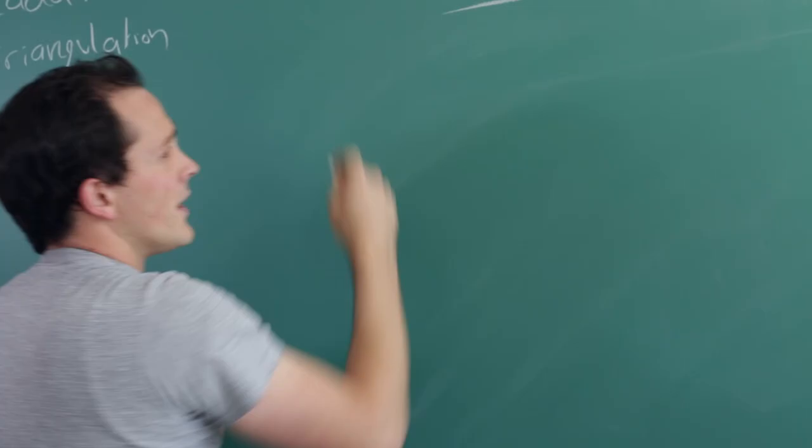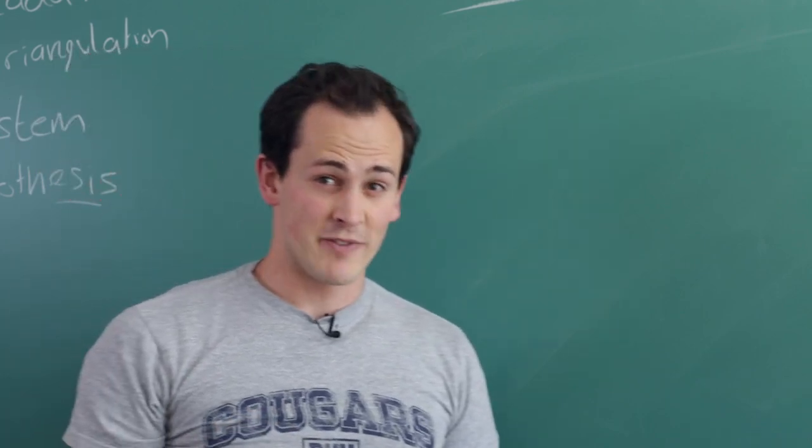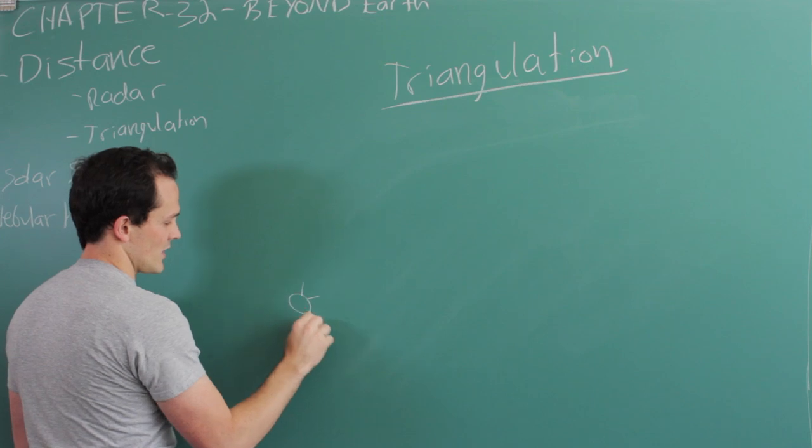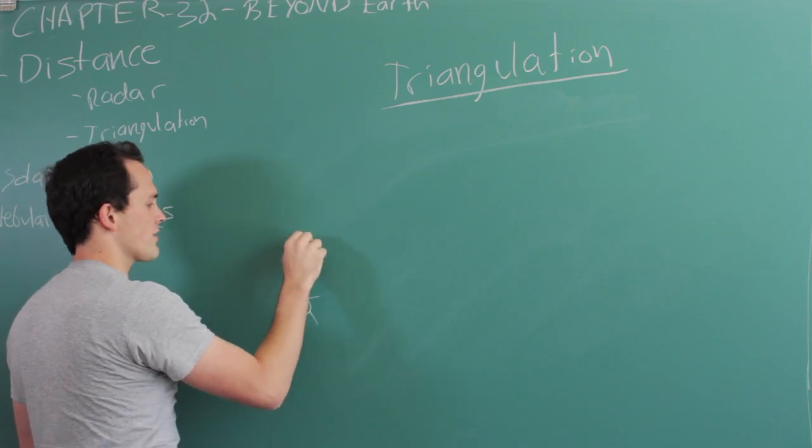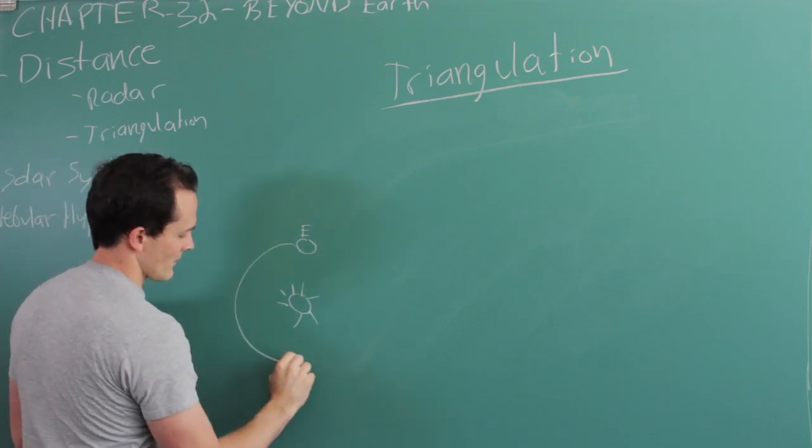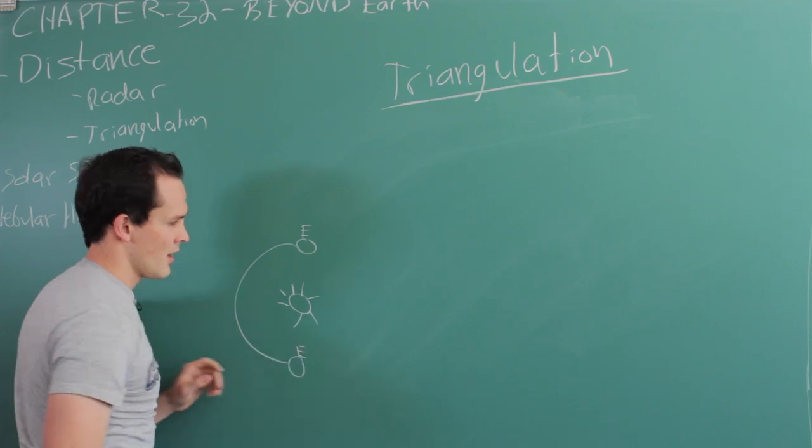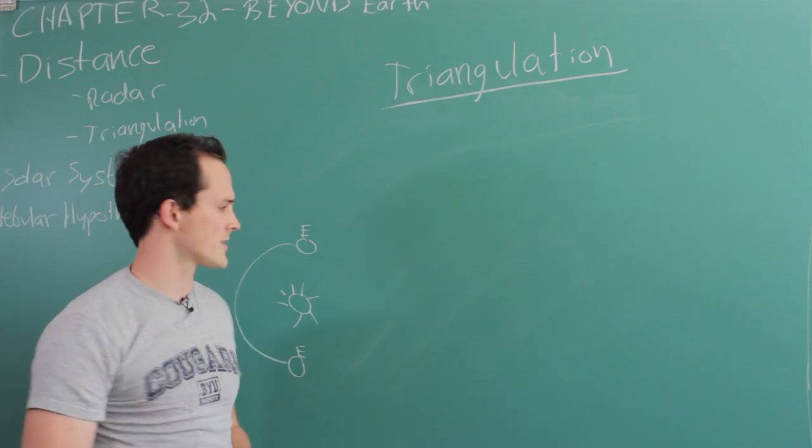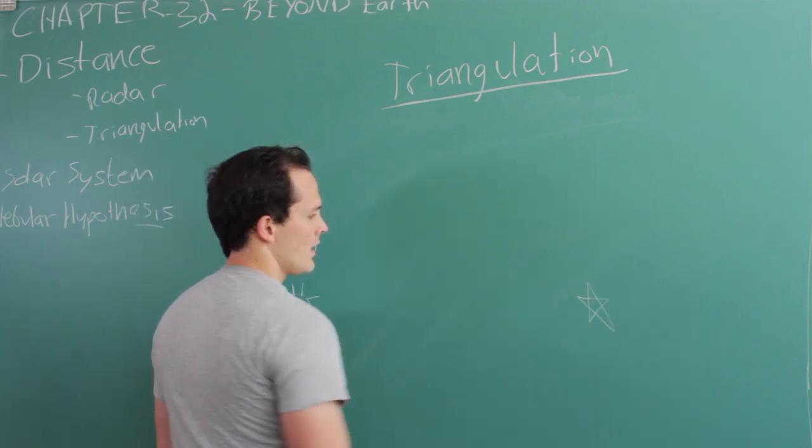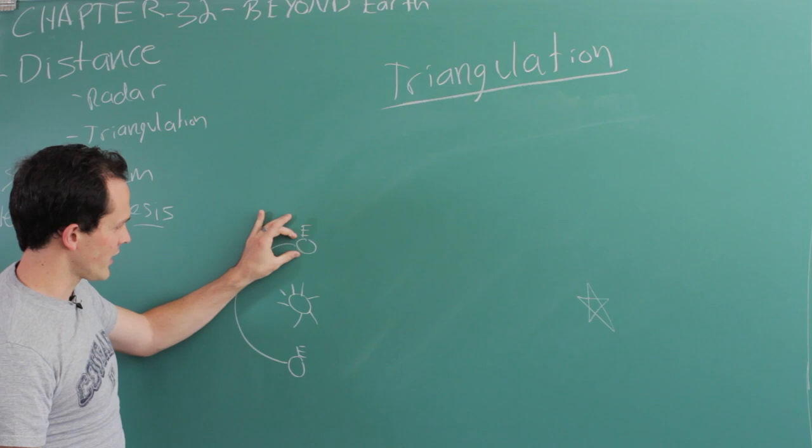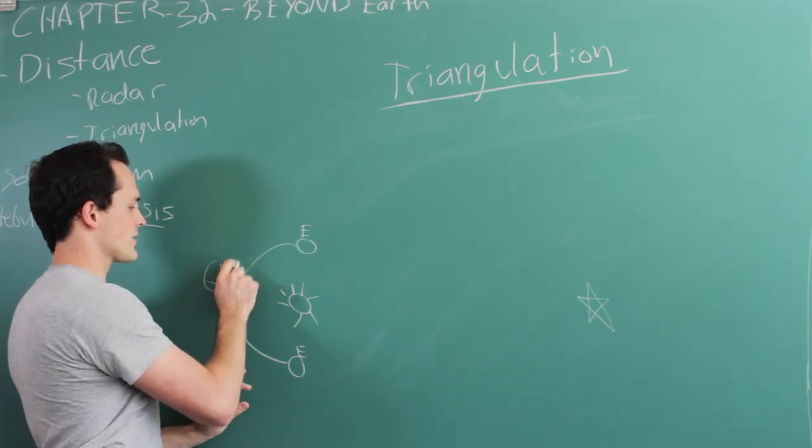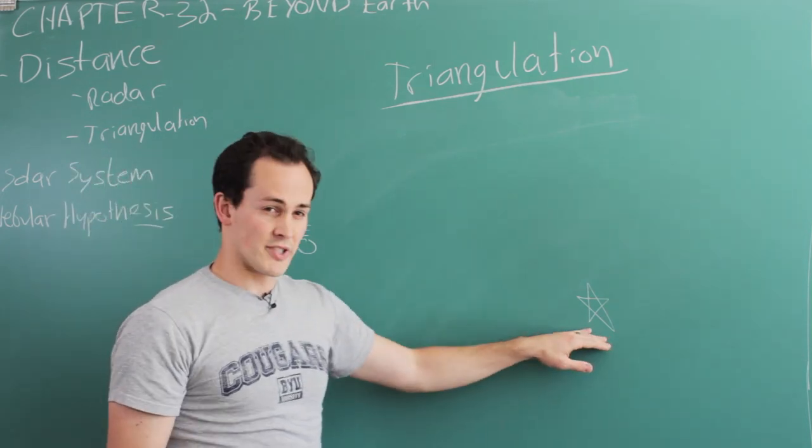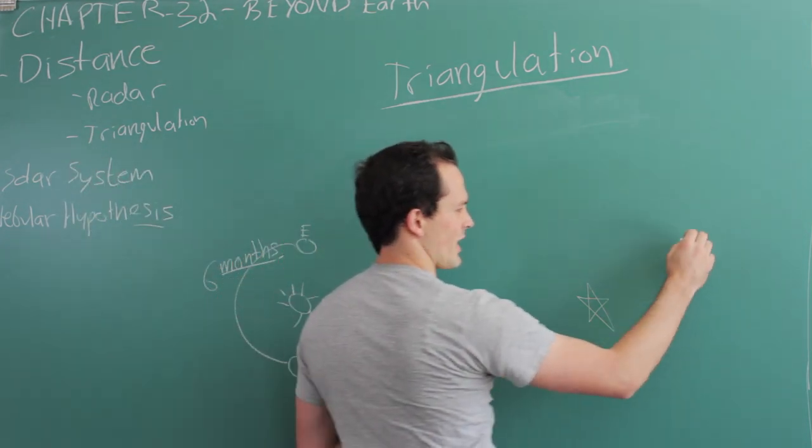Our second thing is triangulation. Now this is an extremely oversimplified version, but that's what we're all about for PS100. What this means is here's our sun, and our Earth is constantly in orbit around the sun. We have a semi-distant star, something that is on the close side of our galaxy. As we move from here to here, six months later on the other side of the sun, this star's position is going to change relative to the stars behind it.